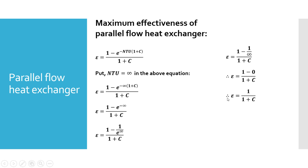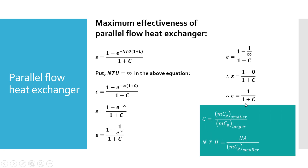So the maximum effectiveness in case of parallel flow heat exchanger is 1 upon (1 plus C), where C is the capacity ratio — it is the ratio of heat capacity MCP of the smaller value divided by the larger value. NTU is the number of transfer units and is equal to UA divided by MCP smaller, where U is the overall heat transfer coefficient, A is the surface area, M is the mass flow rate, and CP is the specific heat.